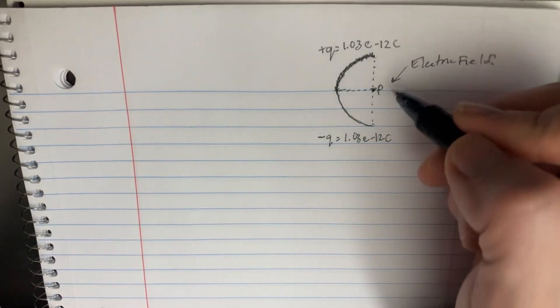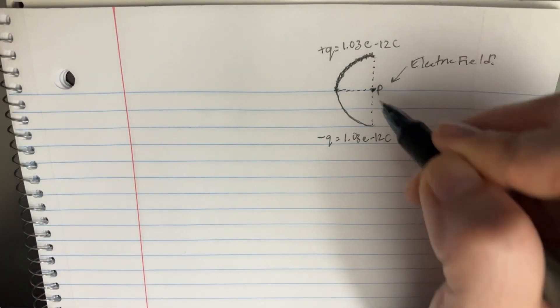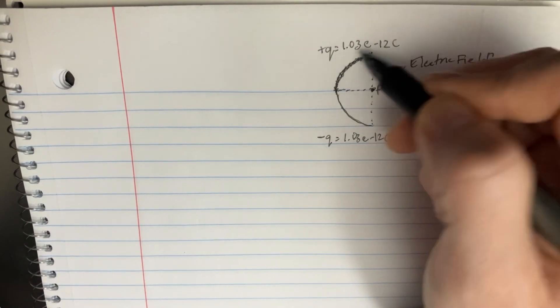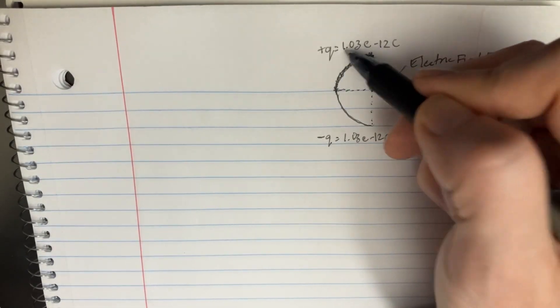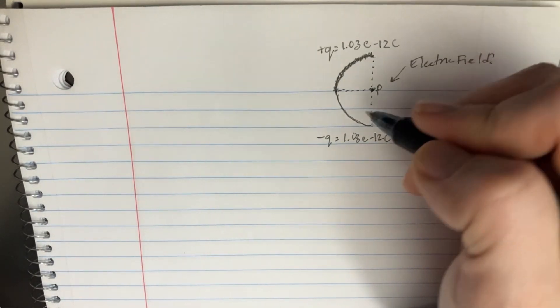So this is an interesting problem. We're asked to find the electric field at this point P, and we have this semicircle. Half of it's going to have positive charge, and half of it's negative charge.